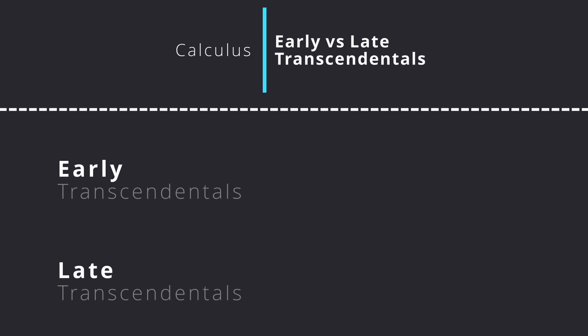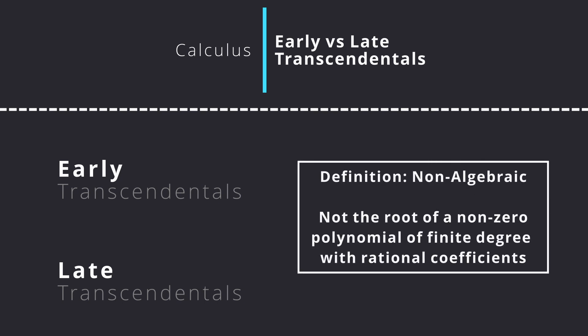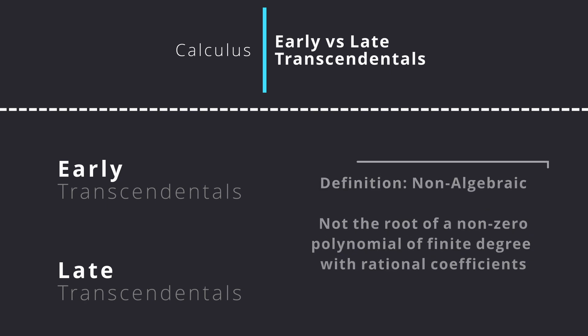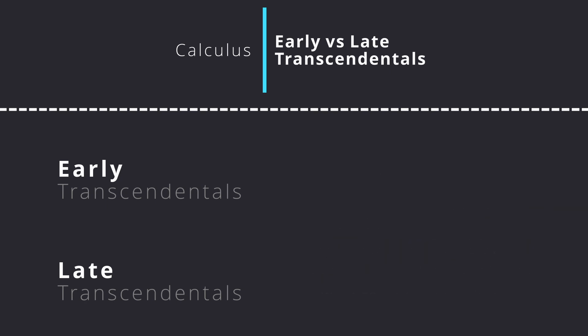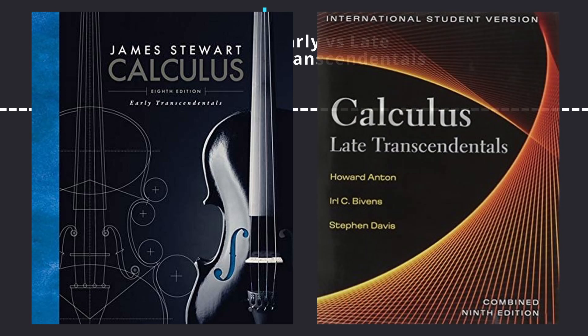The terms are roughly defined by when they introduce numbers such as e and pi, which are non-algebraic, or rather transcendental numbers — hence the name — into the text. Examples of such texts include the widely acclaimed Calculus Early Transcendentals by James Stewart, and Calculus Late Transcendentals by Anton, Bivens, and Davis.